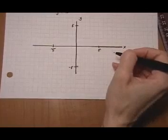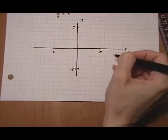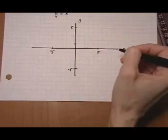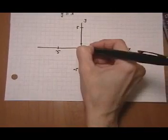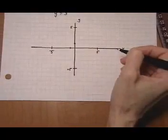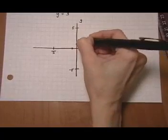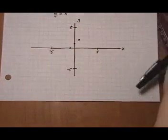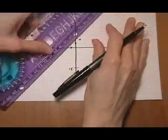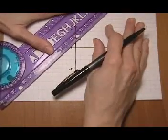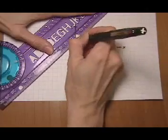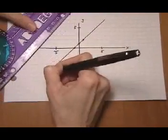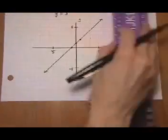And now we can graph our points. So for the first equation, our first point was zero, one. So zero, one. Next point was minus one, zero. Minus one, zero. And then one, two. One, two. And there's our first line. So go through the center of all three points. Extend your line so there's plenty of room for the intersection to happen.